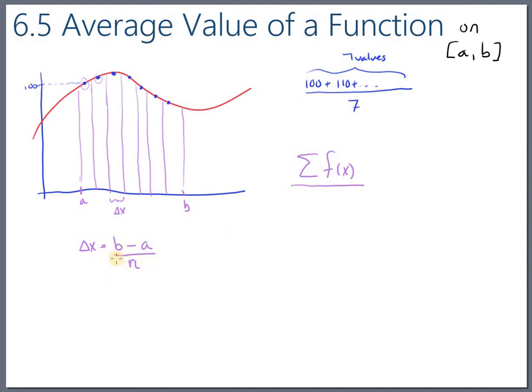So I'm going to take this little equation over here, and I'm going to solve it for n. So just multiply both sides by n, and divide both sides by delta x. So I want to divide by n, but I'm going to replace that with b minus a over delta x.